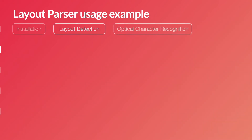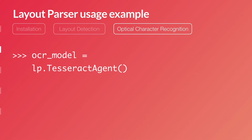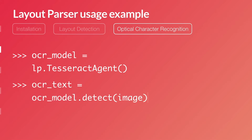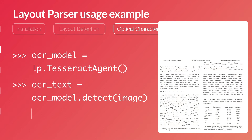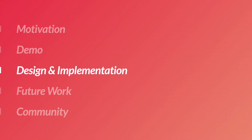Layout Parser also provides handy support for character recognition. You can initialize the OCR engines in a similar way and run detection as well. The handy export function helps save the detected text into various formats like JSON and many others. Now let's take a closer look at how Layout Parser is built, its design and implementation.